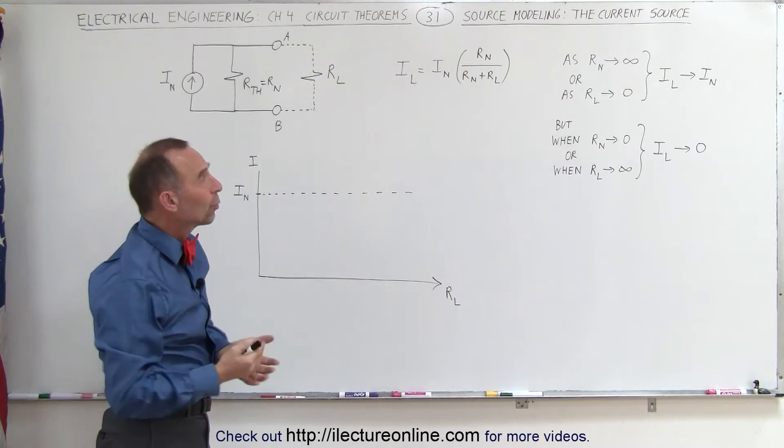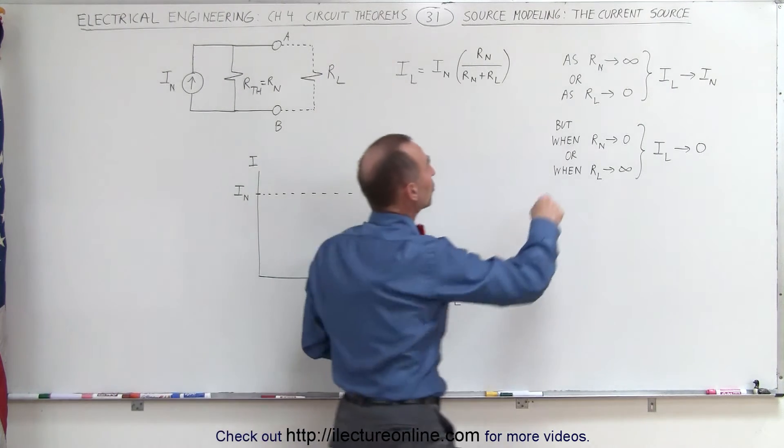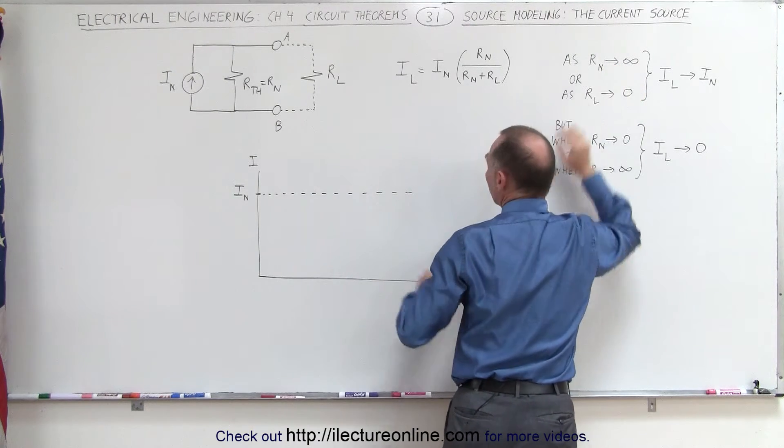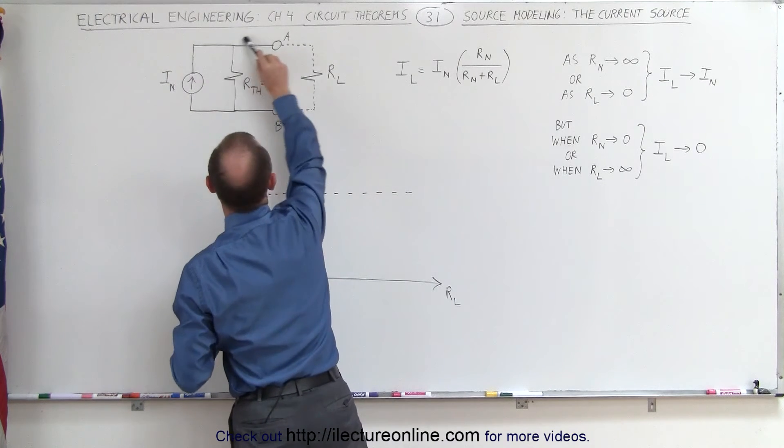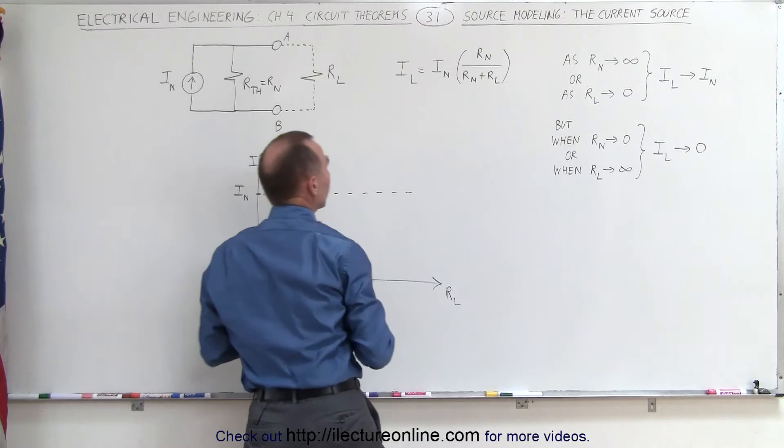Notice when we see the equation like that, as the Norton resistance goes to infinity, as it becomes very large, if the internal resistance is very large, then most of the current will go through the other branch, meaning the load resistor.